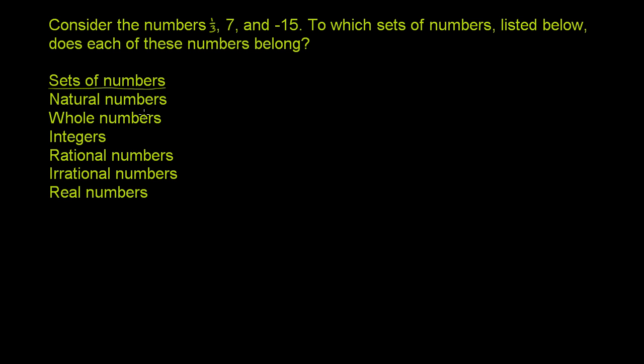Whole numbers is the natural numbers plus 0. Integers are the whole numbers plus the negative versions of the natural numbers.